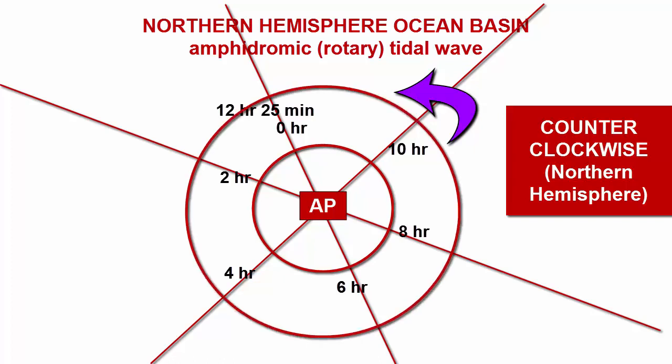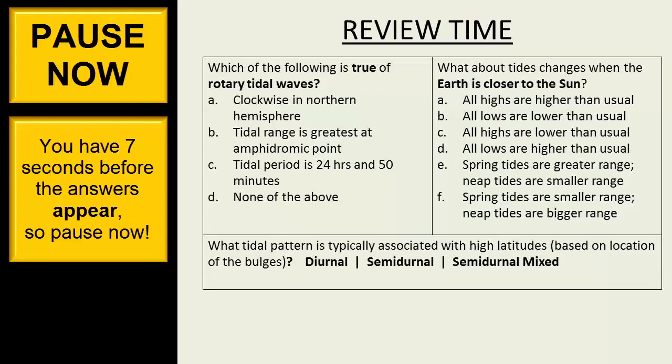Next, we add the corange lines as concentric circles and we label them with increasing tidal ranges as we move outward from the amphidromic point. Pause now.